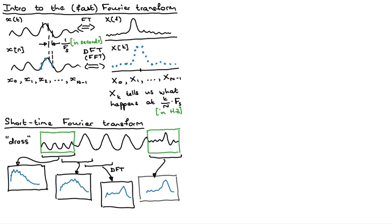This technique is called the short-time Fourier transform, or the STFT. It's really a discrete Fourier transform because we're doing it computationally, but that's what it's called — the short-time Fourier transform. And to visualize the short-time Fourier transform, we often use something called the spectrogram.